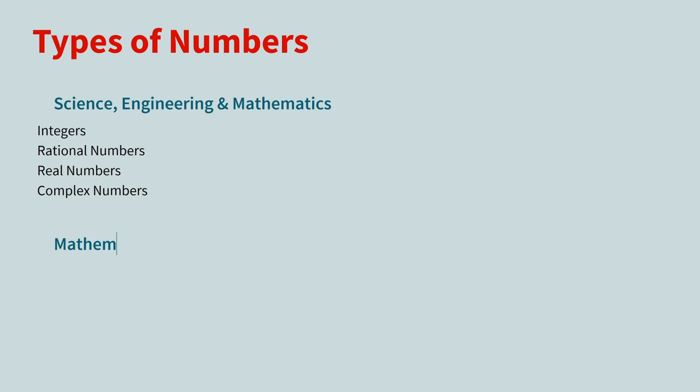In Mathematica and the Wolfram language, the four built-in types of numbers are integers, rational numbers, real numbers, and complex numbers.